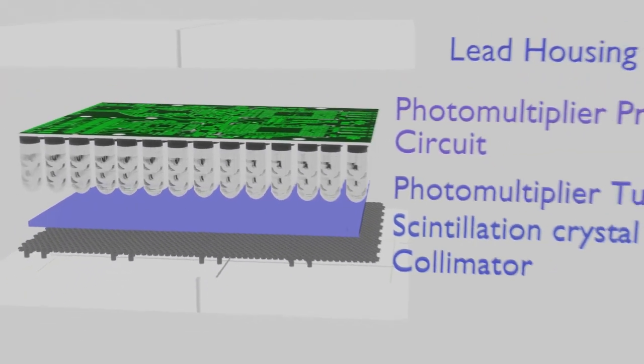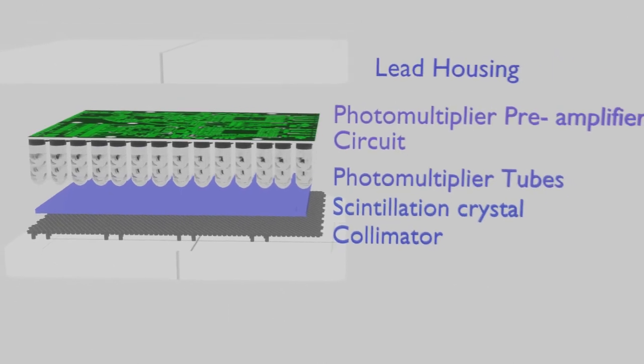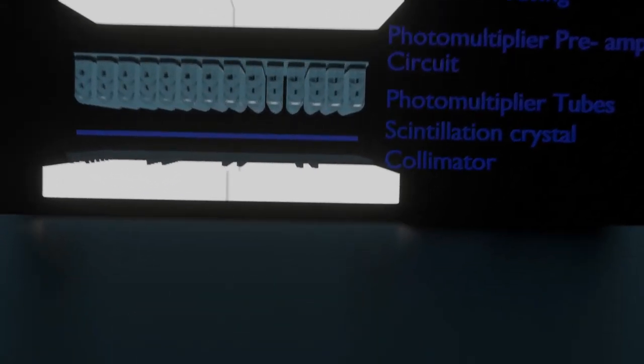The second is that the crystal is viewed by an array of PM tubes, rather than a single PM tube. Signals from the PM tubes are fed to electronic or digital position logic circuits, which determine the XY location of each scintillation event as it occurs by using the weighted average of the PM tube signals.